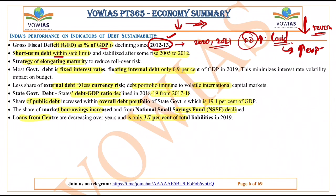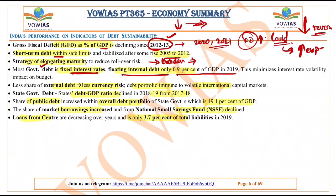Short-term debt is within safe limits and stabilized after some rise in 2005–2012. The strategy of elongated maturity reduces rollover risk — when the maturity period for loans is long, the burden to return money in the near future is less, and the government has ample time to raise revenues so loans can be returned. Most government debt is in fixed interest rate form, with floating internal debt only at 0.9% of GDP in 2019. This gives the government a clear picture since market fluctuations won't impact fixed-rate loans.